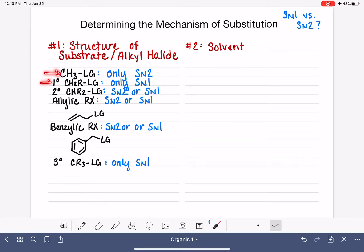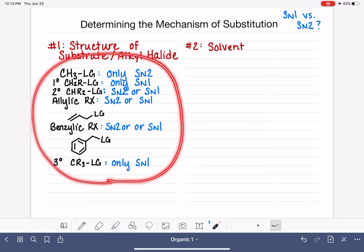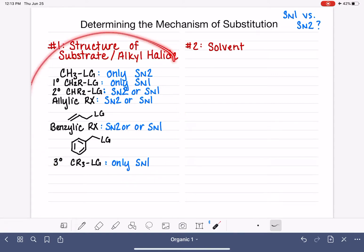If it's a methyl, a primary, or a tertiary molecule, these types of molecules are only capable of doing one mechanism or the other. A lot of times we can choose the mechanism of substitution just by looking at the structure of the substrate.